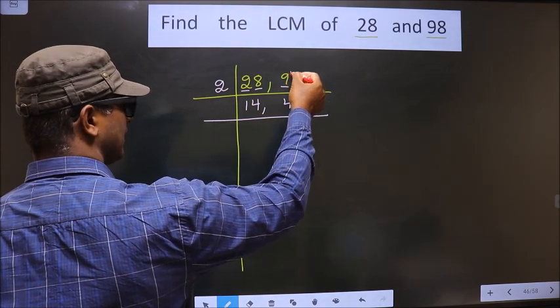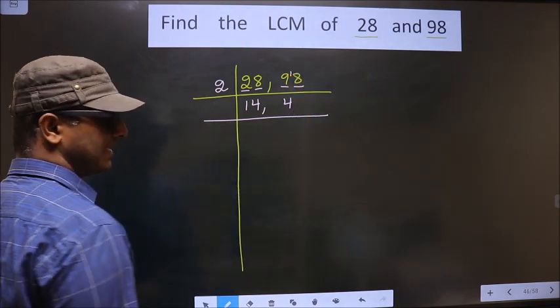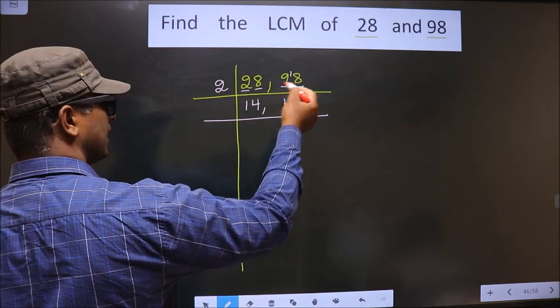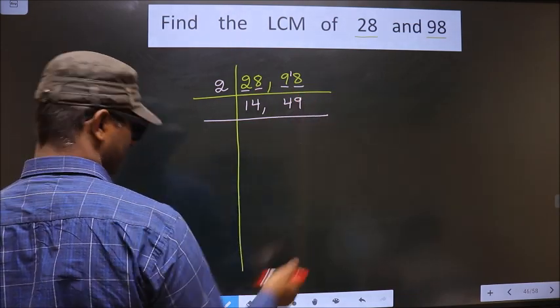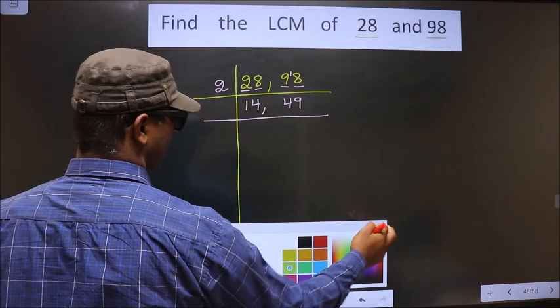9 minus 8 is 1, carry forward 1 making it 18. When do we get 18 in the 2 table? 2 times 9 is 18.